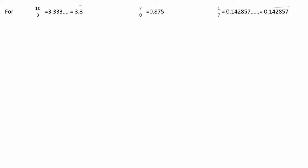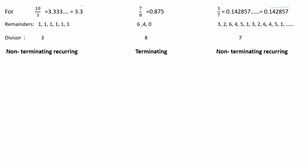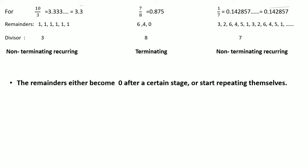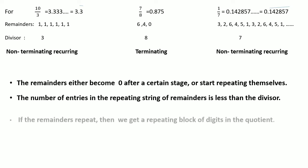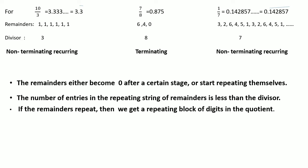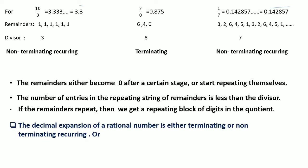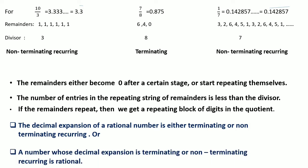The decimal expansion of 10 upon 3 is non-terminating recurring; for 7 upon 8, it is terminating; and for 1 upon 7, it is non-terminating recurring. Thus we conclude from these observations that the remainder either becomes 0 after a certain stage or starts repeating. The number of entries in the repeating string of remainders is less than the divisor. If the remainders repeat, we get a repeating block of digits in the quotient. Thus, the decimal expansion of a rational number is either terminating or non-terminating recurring, and conversely, any number whose decimal expansion is terminating or non-terminating recurring is rational.